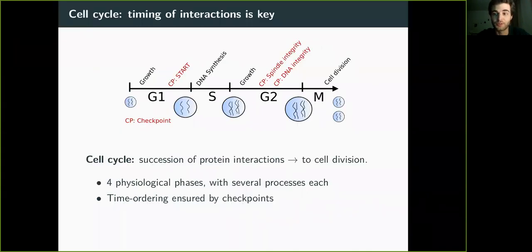What is the cell cycle? It's basically the succession of protein interactions that will lead to cell division. The important thing for us is that it's four main physiological phases: G1, S, G2, and M. And inside each of those, there's several sub-phases and processes. The important thing is that these interactions are ordered in time and they must happen in a certain given order.